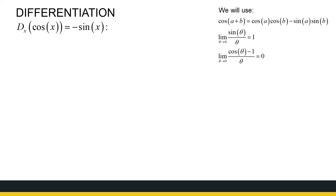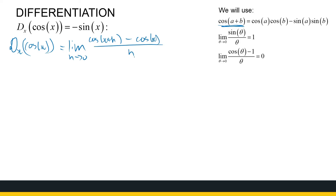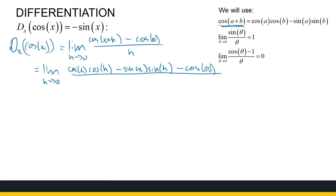Now let's look at the other one: the derivative of cosine of x is minus sine of x. We use the same two limits, but note that cosine of a plus b is cosine a cosine b minus sine a sine b. So the derivative of cosine of x is the limit as h approaches zero of cosine of x plus h minus cosine of x, all over h. Expanding cosine of x plus h gives cosine x cosine h minus sine x sine h, minus cosine x.